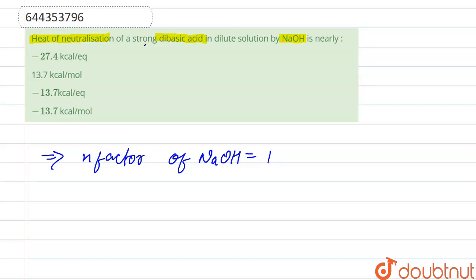And in the question it's also said that a strong dibasic acid. So if we know that n-factor is the number of H+ ion or OH- ion liberated respectively from acid or base. So for n-factor of NaOH it is one, and n-factor of dibasic acid is two.